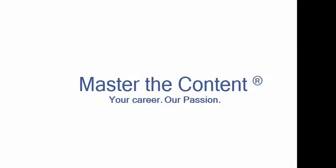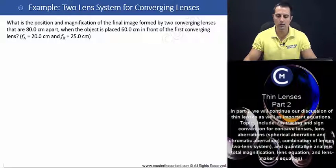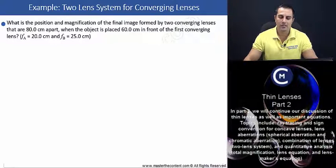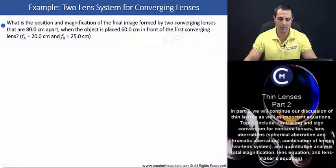Your career, our passion. Now let's begin by reading our problem. Example: two-lens system for converging lenses. What is the position and magnification of the final image formed by two converging lenses that are 80 centimeters apart, when the object is placed 60 centimeters in front of the first converging lens? The focal lengths are also given to us.